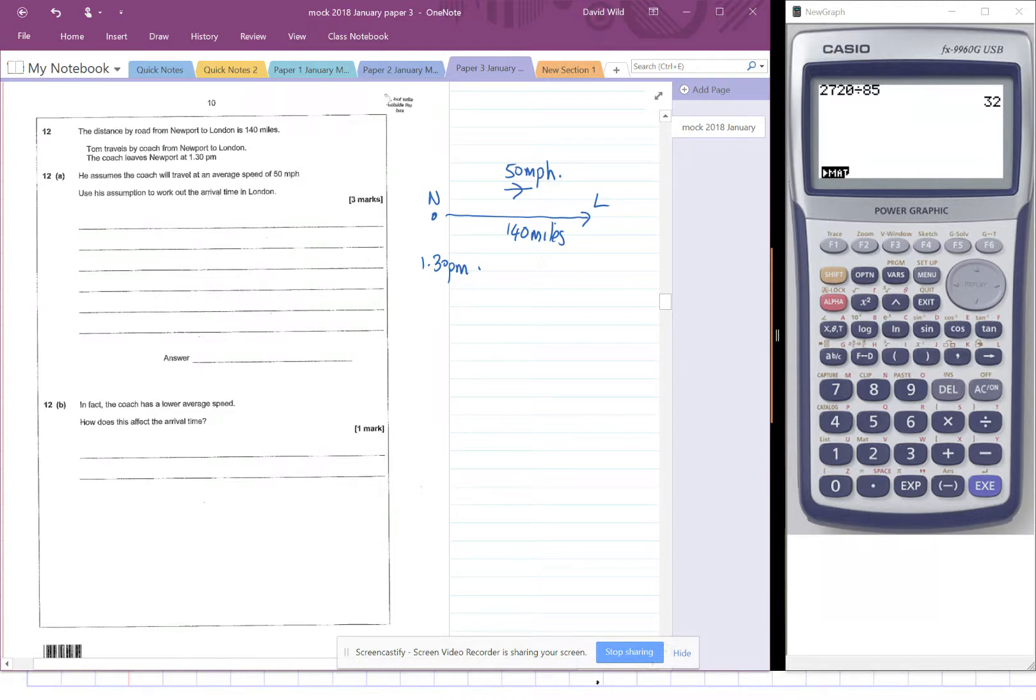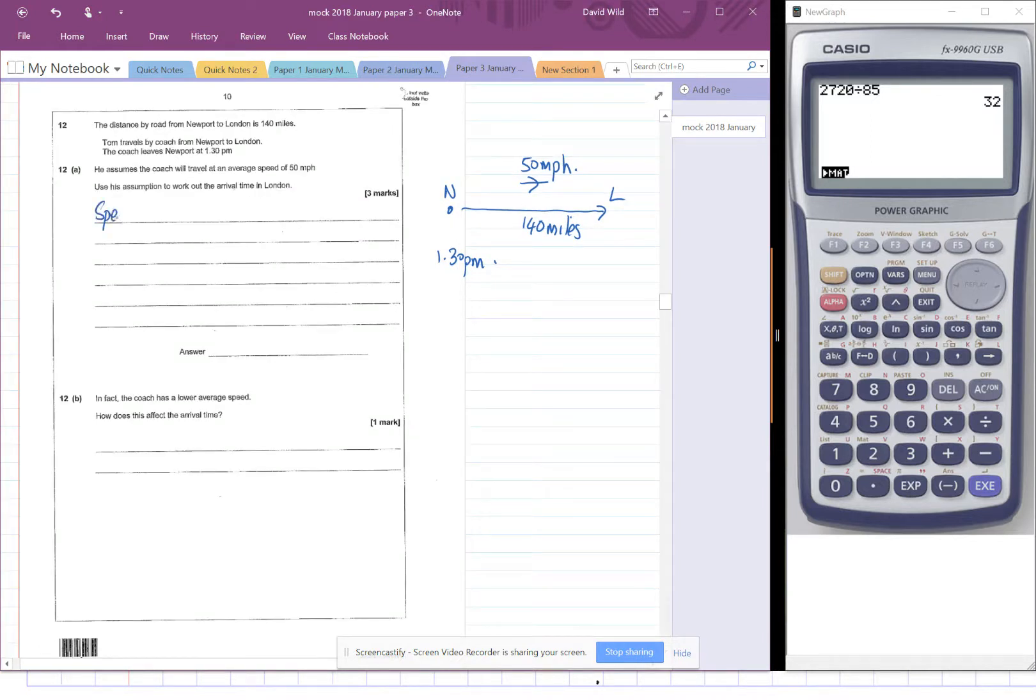Using his assumption to work out the arrival time. Okay, so the arrival time. We need to first of all calculate how long it's going to take to do this journey before we can calculate the final arrival time. So how do we do that? Well, we know that the speed is distance over time.